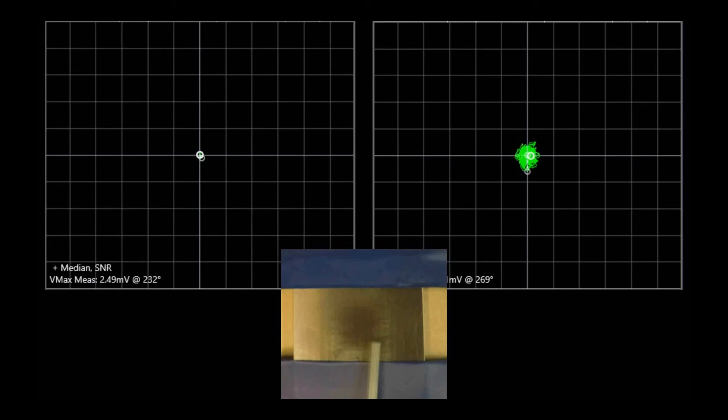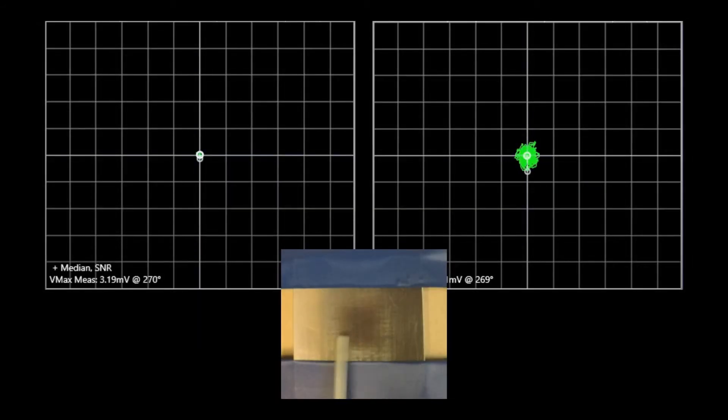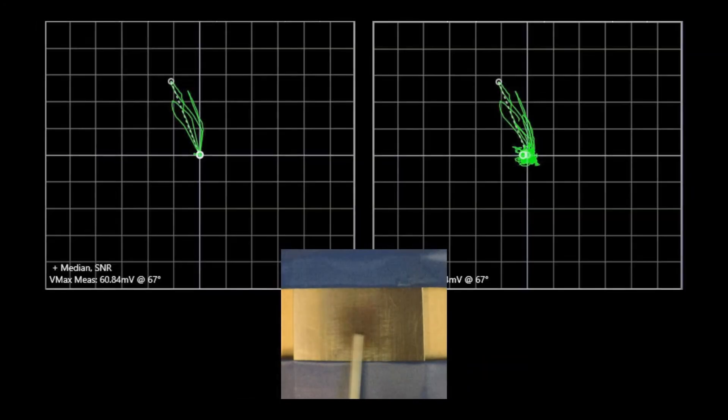The screen on the left is with the SNR filter applied, and the screen on the right is with no filter applied. You can see the difference that the SNR filter makes just by looking at the noise balls there. As I scan past the notch, you will see it momentarily on the screen.